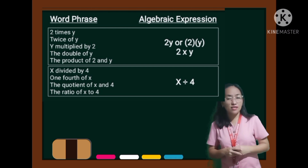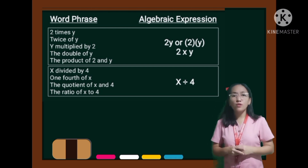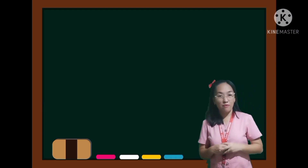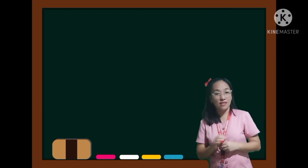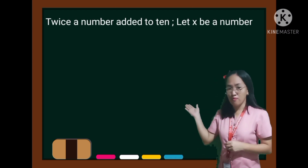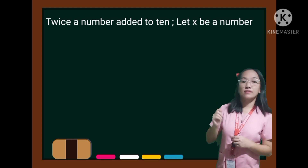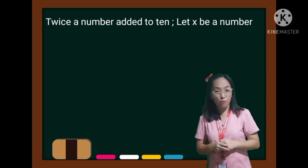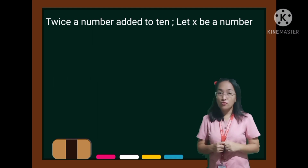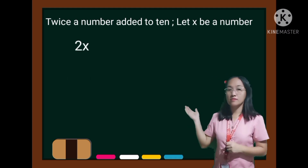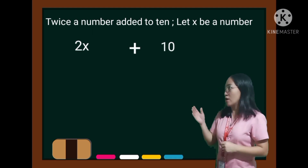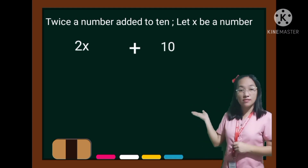Giving more examples to our kids will make them understand the lesson easily. My dear parents, you may do this technique too in teaching your child. For instance: twice a number added to 10. Let X be a number. Guide them in the translation — twice a number is 2N, added is the plus sign, and number 10. So this is the translation.